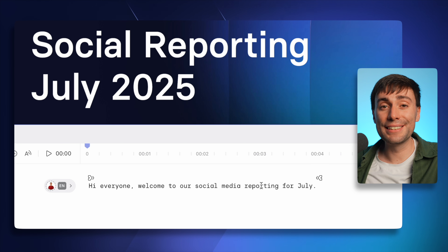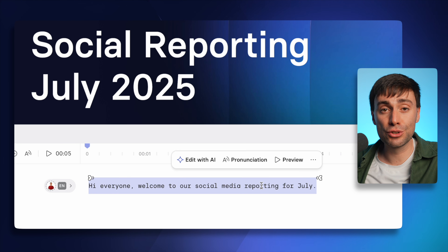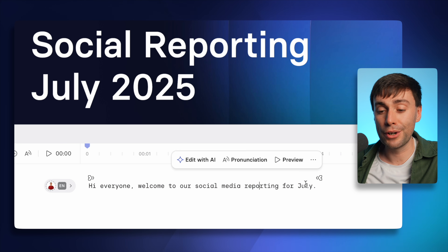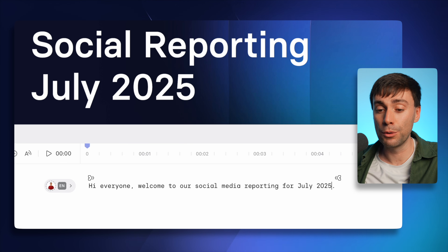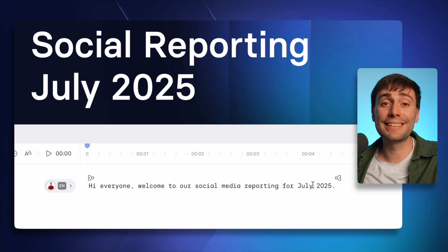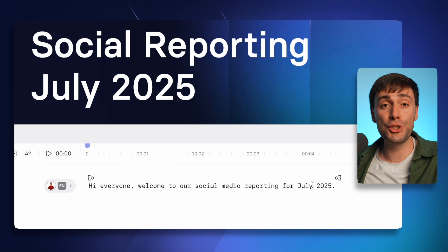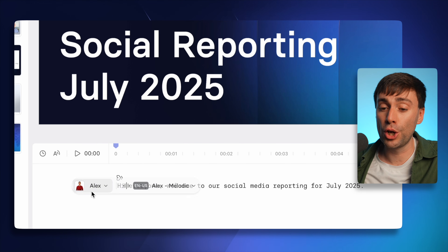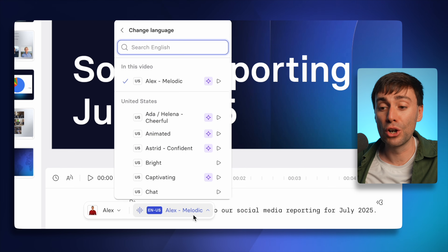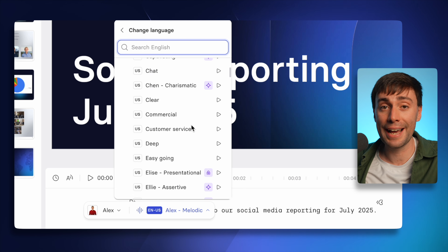Once inside the Synthesia editor, you can start by editing the voiceover script for each slide at the bottom of the screen — just delete and type in there like a Word document. And if you don't like the default voice, you can easily change it by hovering over the presenter options and opening up the voice library, where there are lots of different options for tone and language.